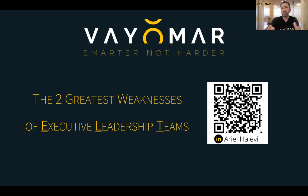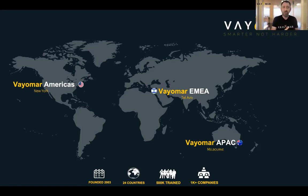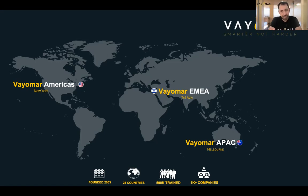Sometimes they're known as SLTs, sometimes as ELTs — executive leadership teams. Over the past 20 years, myself and my colleagues at VARMR have literally roamed this planet. We've met with teams from over 24 countries, spoken with companies that are either hyper-growth or well-established enterprises spanning over a dozen industries. And we started noticing a pattern emerging — a pattern having to do with inherent weaknesses of senior executive leadership teams. I'm going to share two such weaknesses with you.